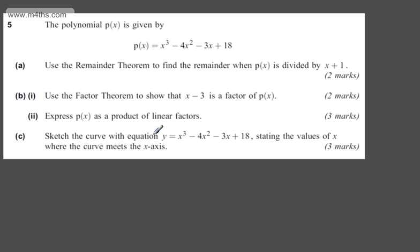In question number 5, we're told the polynomial p is given by p = x³ - 4x² - 3x + 18. In part A, for two marks, we're asked to use the remainder theorem to find the remainder when p is divided by x + 1.